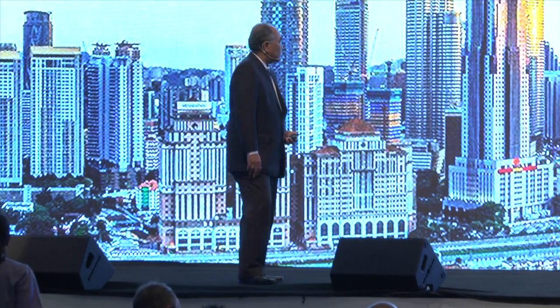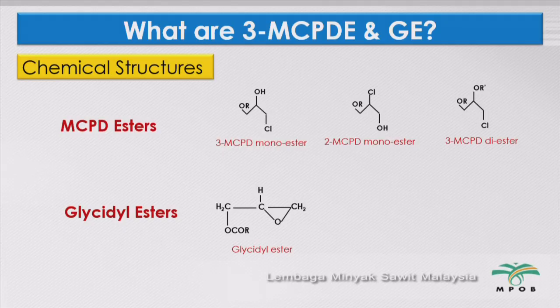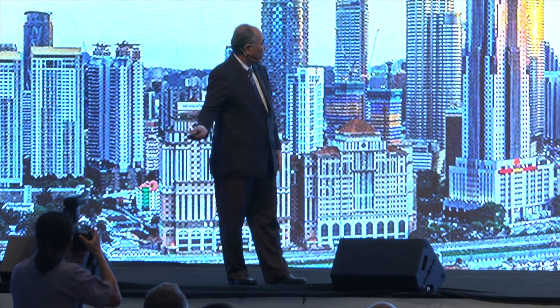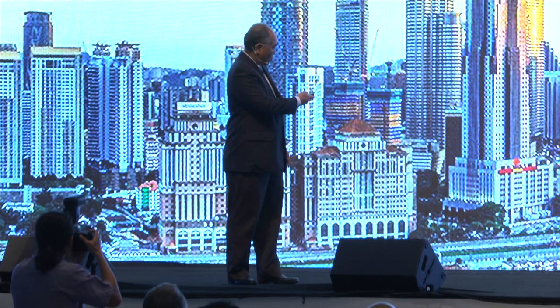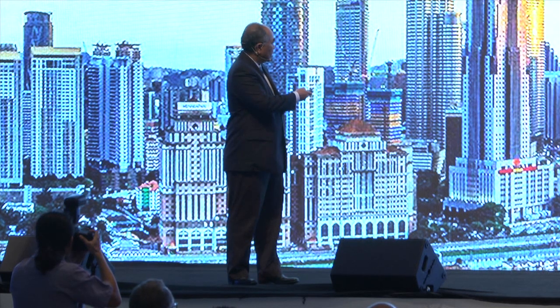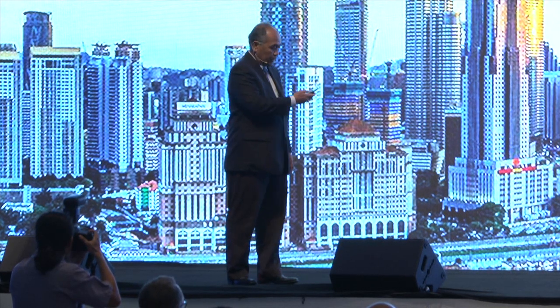What are the 3MCPD and GE structures? This is the basic structure of 3MCPD ester: this is the 3MCPD monoester, this is the 2MCPD monoester, this is the 3MCPD diester, and this is the glycidyl ester. The key word is always chlorine — it's always about chlorine.